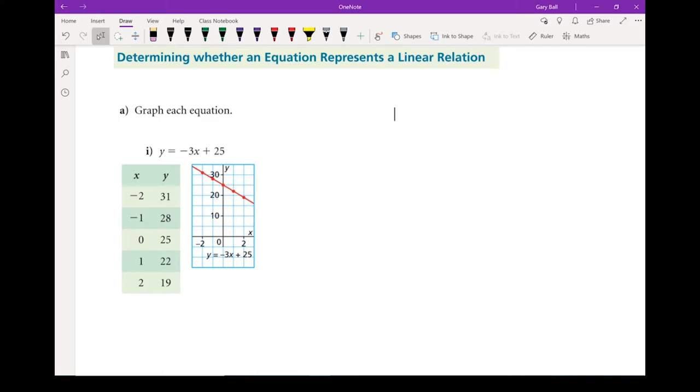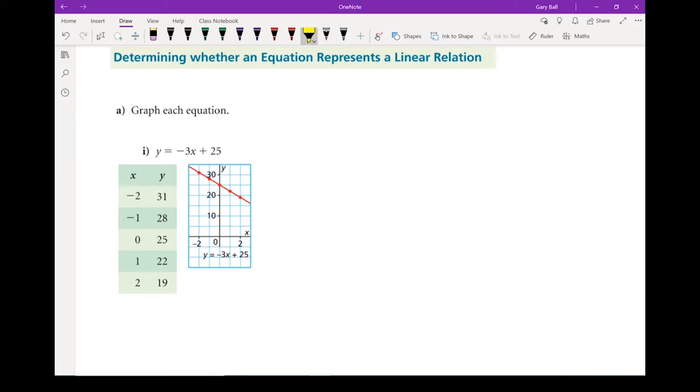Let's talk about how to determine whether an equation represents a linear relation. So there I've got an equation, y equals negative 3x plus 25. We have a table of values, and I've actually got it graphed as well. Let me show you how we figured out those table of values. So you pick some x values, and you run each of those through the equation, and whatever it spits out will give you your y values. So how we do that, my equation is y equals negative 3x plus 25.